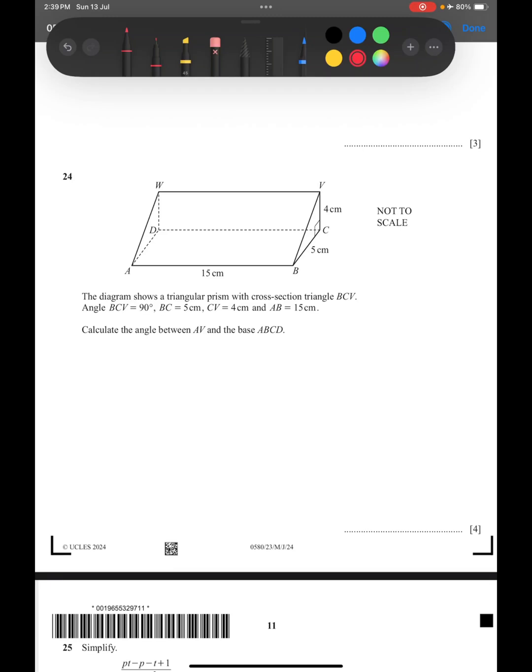Now in question 24, the diagram shows a triangular prism with cross-section triangle BCV. This is BCV as you can see. They have given you angle BCV is 90 degrees, so BCV, this is 90 degrees.